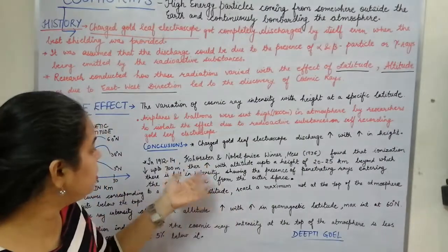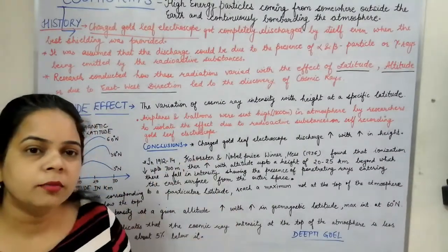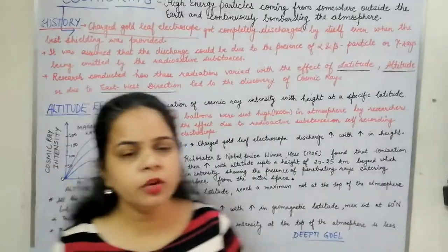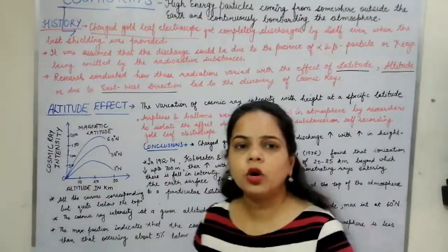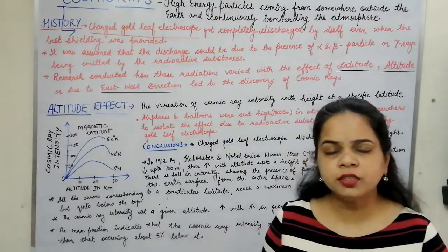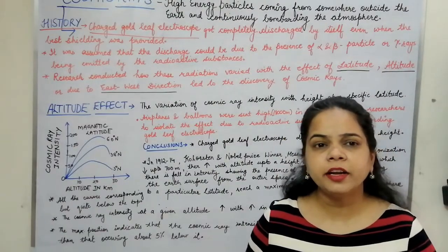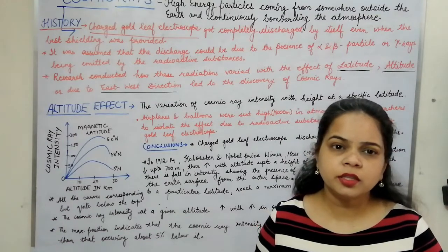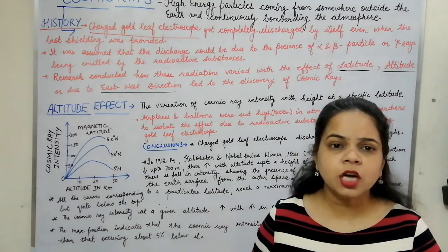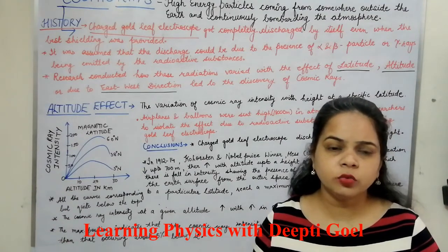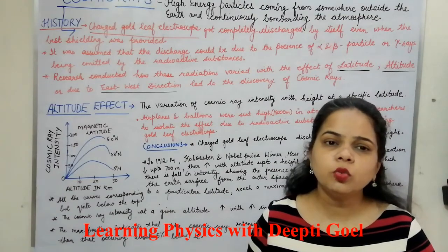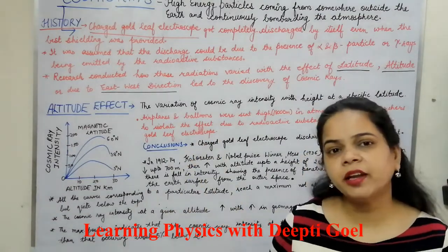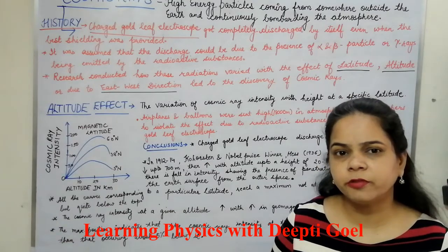This is the history of what Kohorstel and Nobel Prize winner Hess discovered. Similarly, we will see the various changes observed with the latitude effect and with the change in the east-west direction — whether the discharge was more at the equator or more at the poles. We shall discuss the latitude effect and the east-west direction effect next.